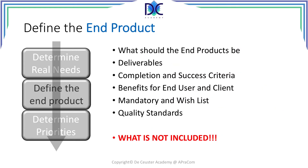The next step is about defining the end product. What should the end product or products be? What are the deliverables that have to be provided? When is the work completed? It's very important to say when we reach this goal, the work is completed. What are the success criteria? How do we define success? What are the parameters? In this step, we have to identify the benefits for the end user and the client. The end user may end up with a more efficient program working better, and the client may save a lot of money.